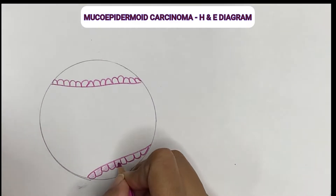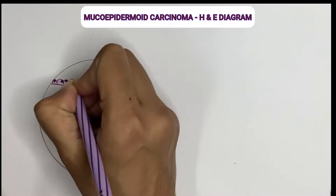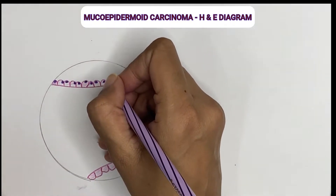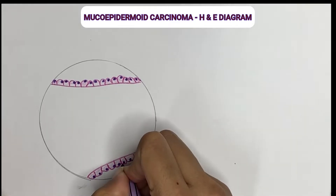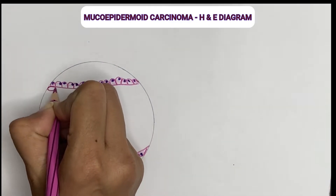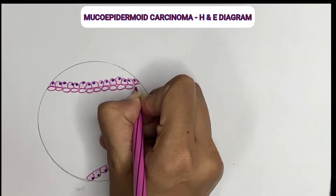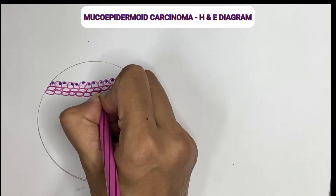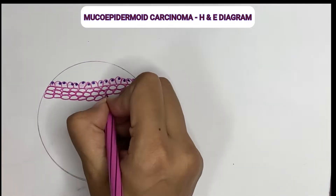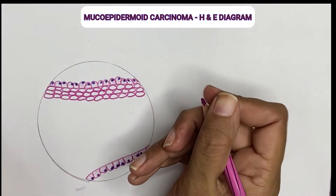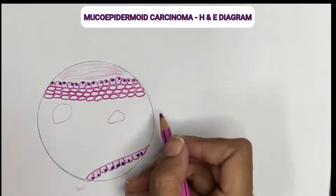The mucus secreting cells have a foamy cytoplasm and the nucleus is positioned towards one end due to the mucin. The second population are the intermediate cells — polygonal shaped cells with intercellular bridges and flat cell features. Now drawing a few more cystic spaces; the cyst is filled with mucin.